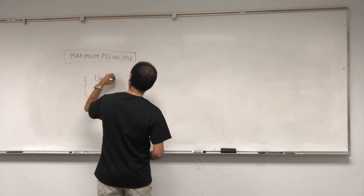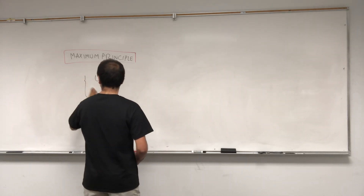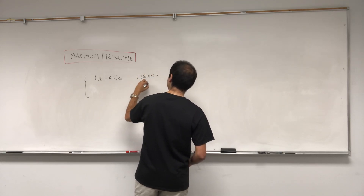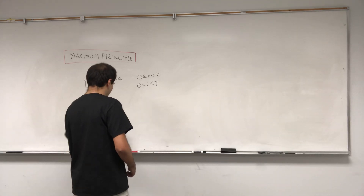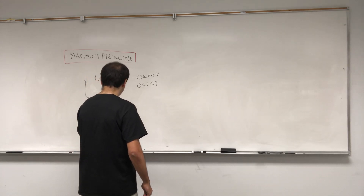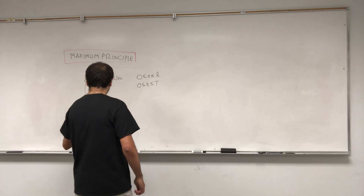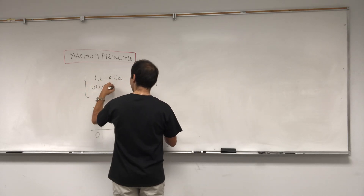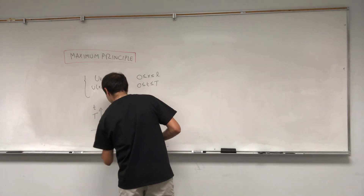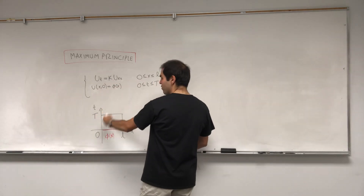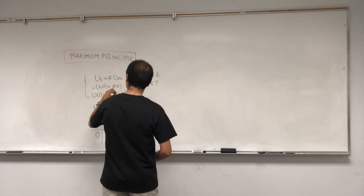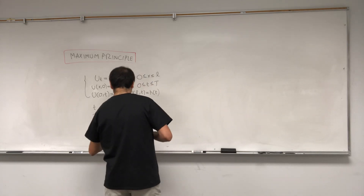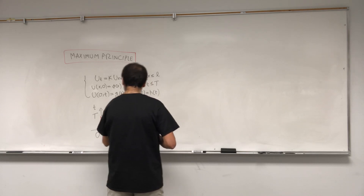Here's the setting. Suppose you have the heat equation: ut equals k·uxx. x is between 0 and L, and t is between 0 and some terminal time, so we're focusing on this rectangle. Initially, u(x,0) equals phi. At the boundary, u(0,t) equals g(t), and u(L,t) equals h(t). So here u is h(t) on the right, and g(t) on the left.